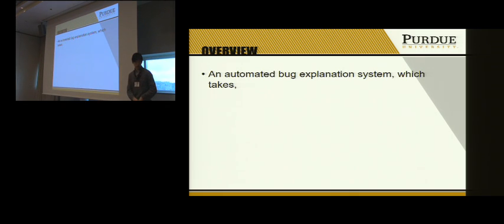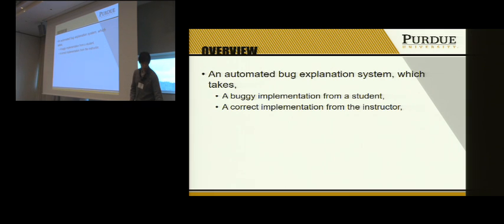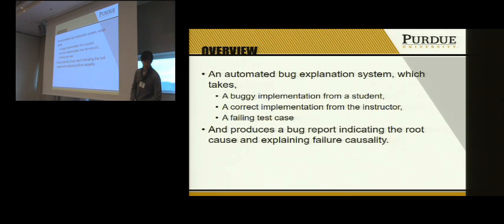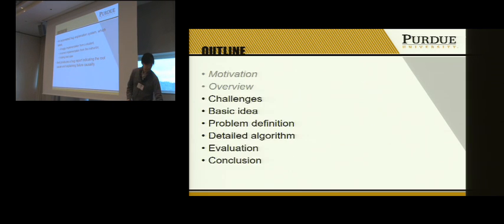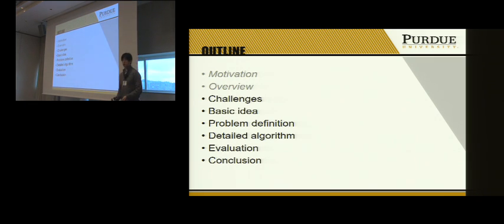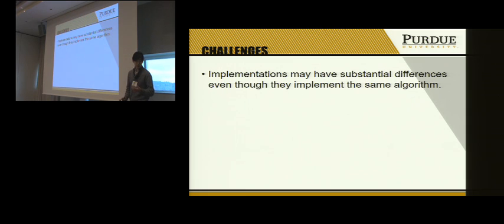In this work we propose an automated bug explanation system which takes a bug implementation and a correct implementation from the instructor and a failing test case, and produces a bug report indicating root cause and explains the causality by comparing two executions. Next I will explain the challenges in this work and the basic idea of our system, define the problem in a more formal way, and describe our algorithm and evaluation.